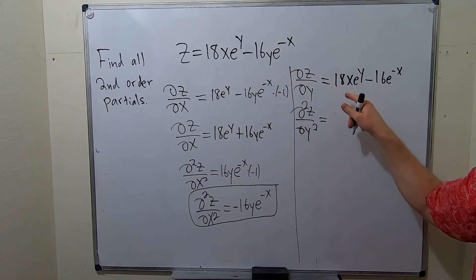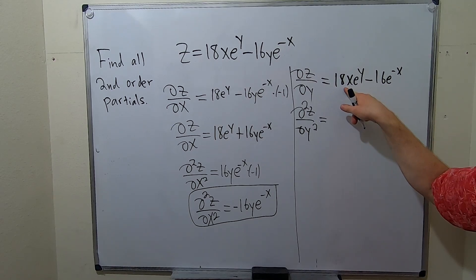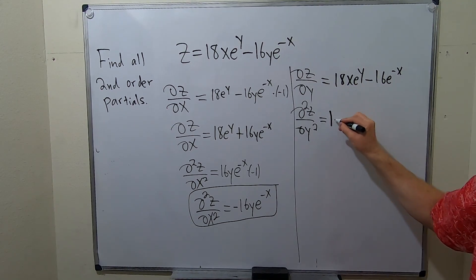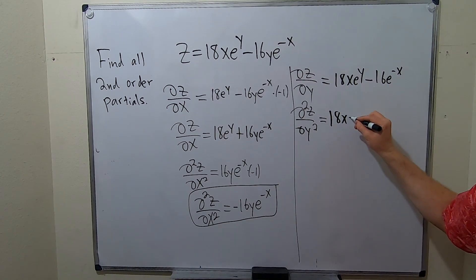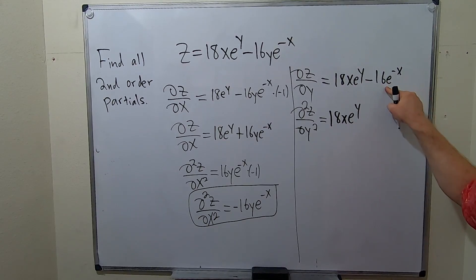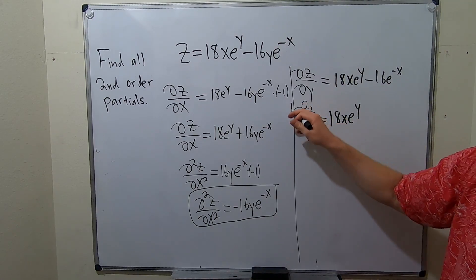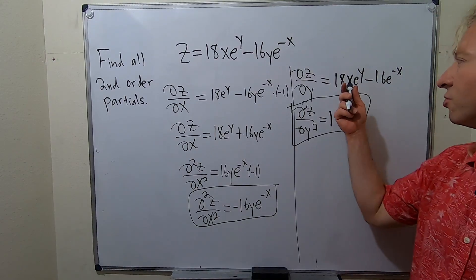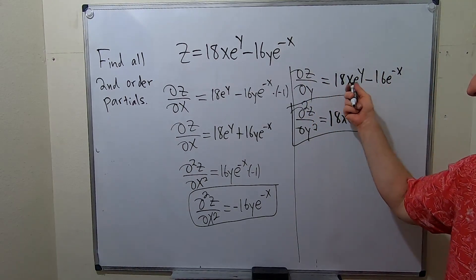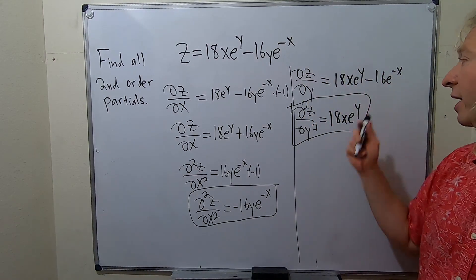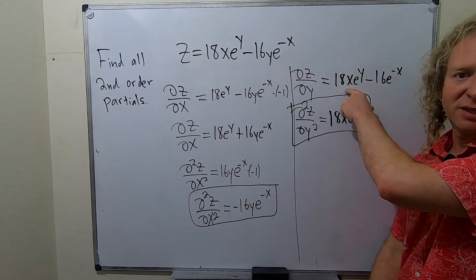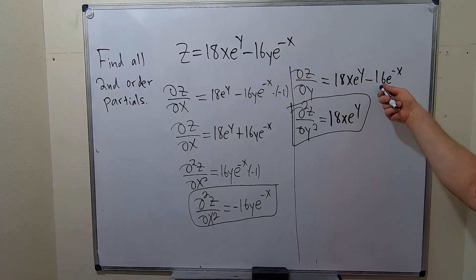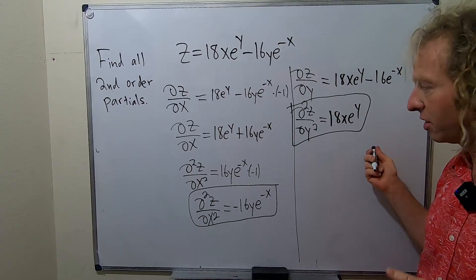Taking the partial with respect to y again: 18x is a constant, and the derivative of e to the y is e to the y — it's tricky. Then for the second term, the derivative with respect to y of e to the negative x is 0, so it vanishes. So del squared z del y squared is 18x e to the y. We took the derivative with respect to y: 18x stays, derivative of e to the y is e to the y, and the constant term's derivative vanishes.